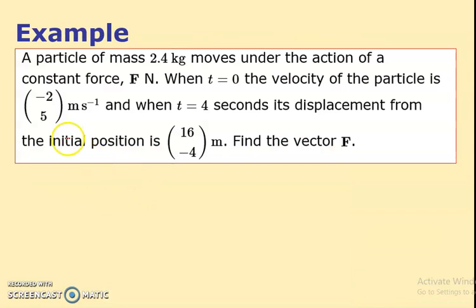Here's our first example. A particle of mass 2.4 kilograms, so m equals 2.4, moves under the action of a constant force F. Now a constant force implies to me that there's a constant acceleration. But that's a bit counter to what I was just saying just now.